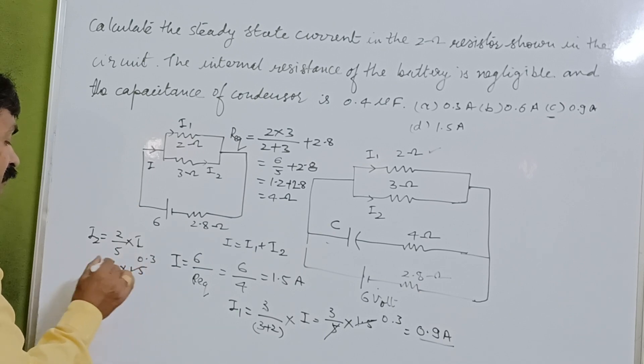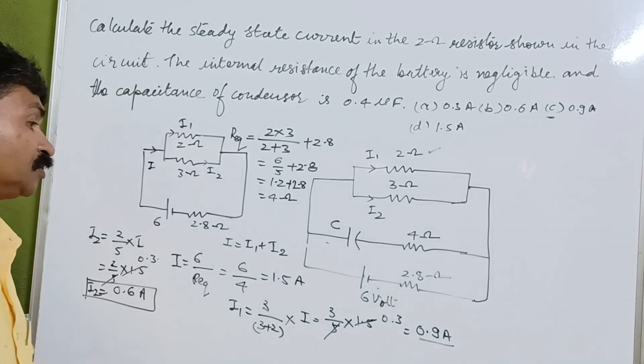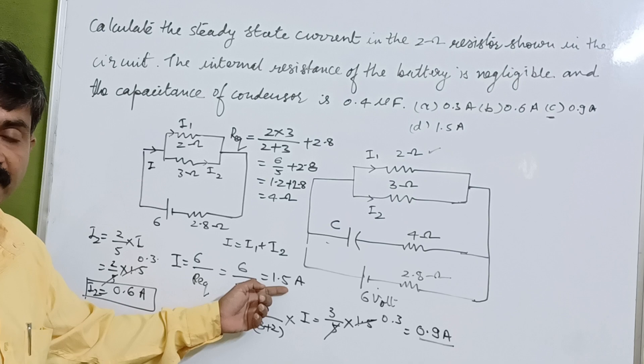I2 is equal to 0.6 Ampere and I1 is equal to 0.9 Ampere. So 0.9 plus 0.6, total current flow is 1.5 Ampere.